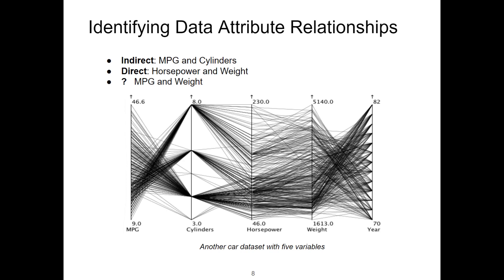The data attribute relationship can be defined as direct, indirect, or no relationship. This image also shows a similar car dataset with five attributes. If one data attribute value increases and the neighboring axis value decreases, this is how we find an indirect relationship in the parallel coordinates. When we look at the axis of MPG, miles per gallon, and cylinders, in general, as MPG increases, the number of cylinders decreases. Therefore, we define this as an indirect relationship.